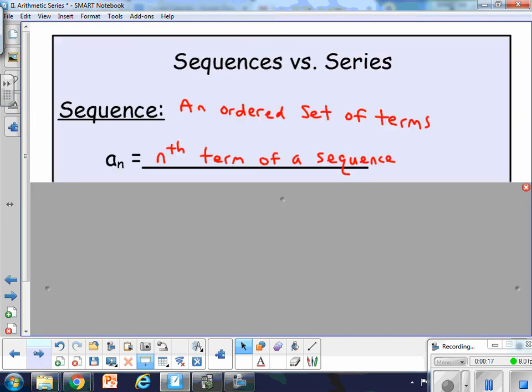So first off, let's jump to here, basically the difference between the sequence, which is usually studied first. A sequence is just a pattern or an ordered set of terms. And a sub n is the notation to represent the nth term of a sequence.